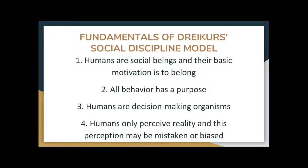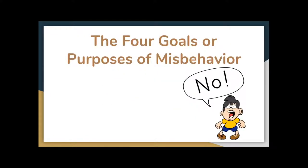This leads into his logical consequences model. Dreikurs believed that students only act up because they have a desire to have an active part in the group. If they perceive that they're not wanted, appreciated, or welcomed, they will react with misbehavior based on their understanding of reality. He believed that there are four goals of misbehavior — that misbehavior is not aimless, but has an end goal.